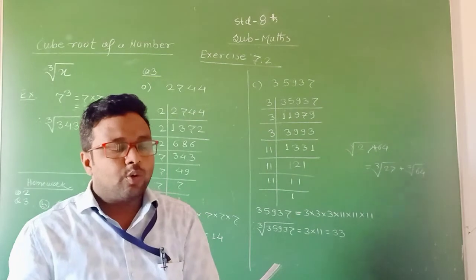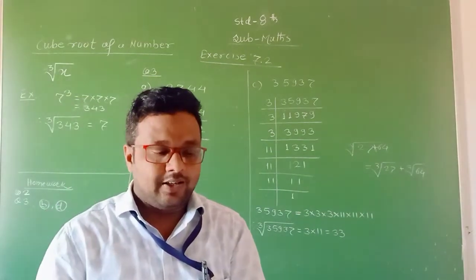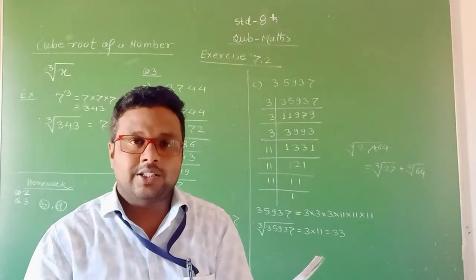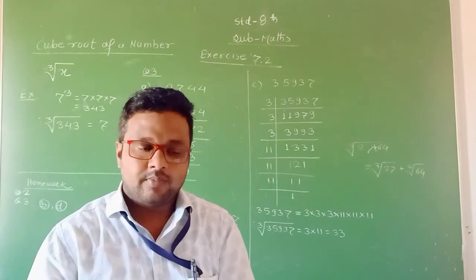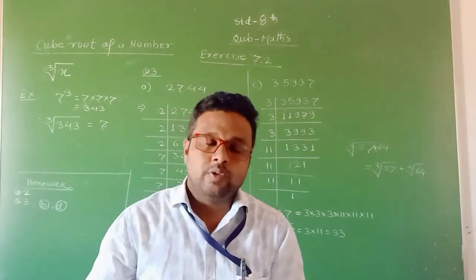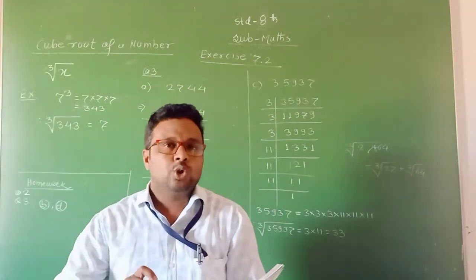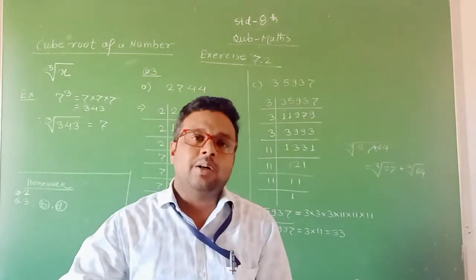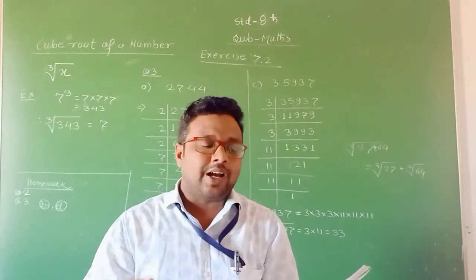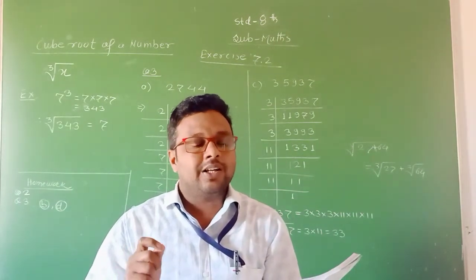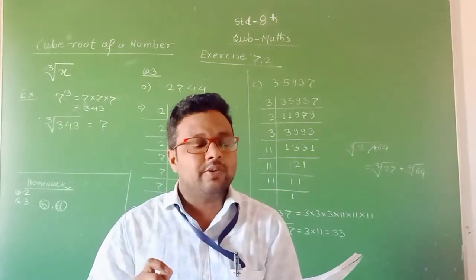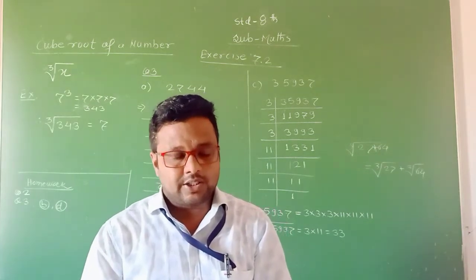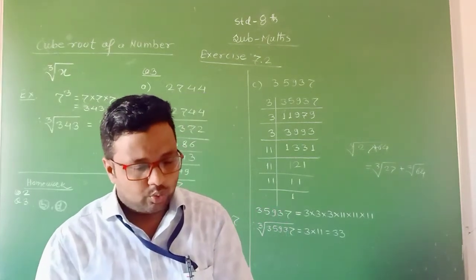Statement G: The cube of any multiple of 3 is always divisible by 27. It is a true statement. We know that the cube of 3 is 27. If you take multiples of that, then that number is always divisible by 27. This is a true statement.